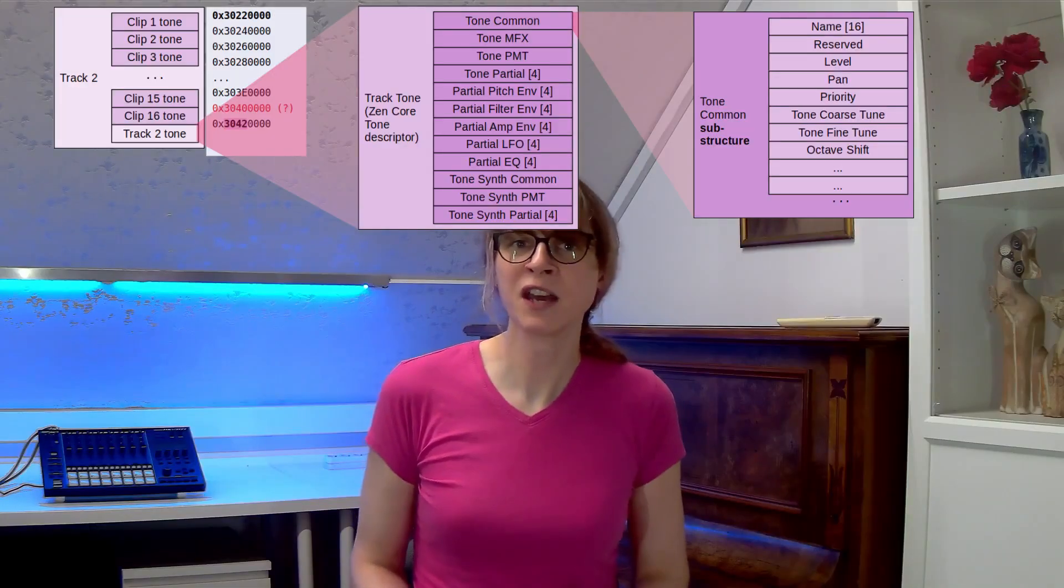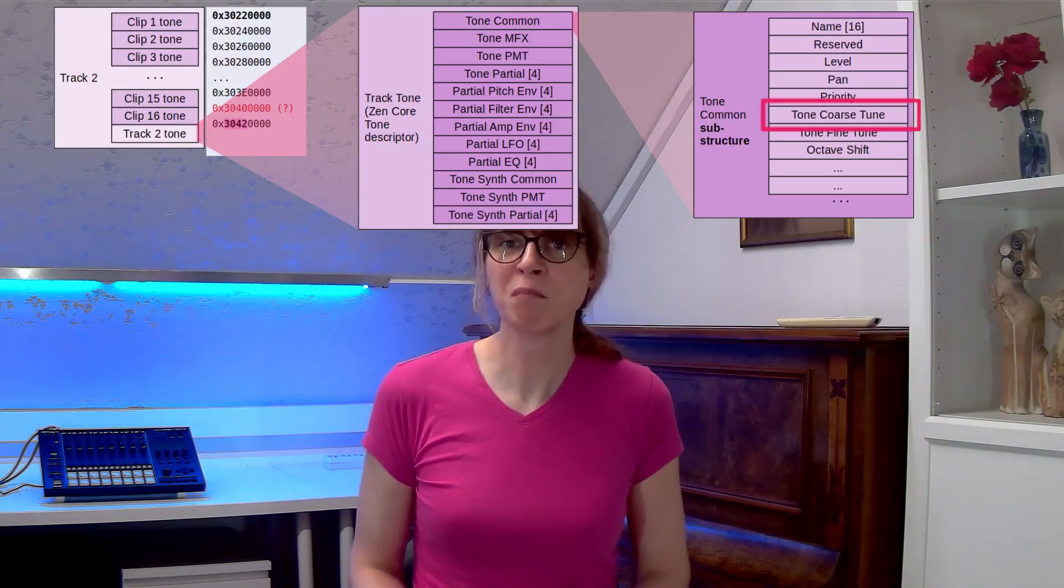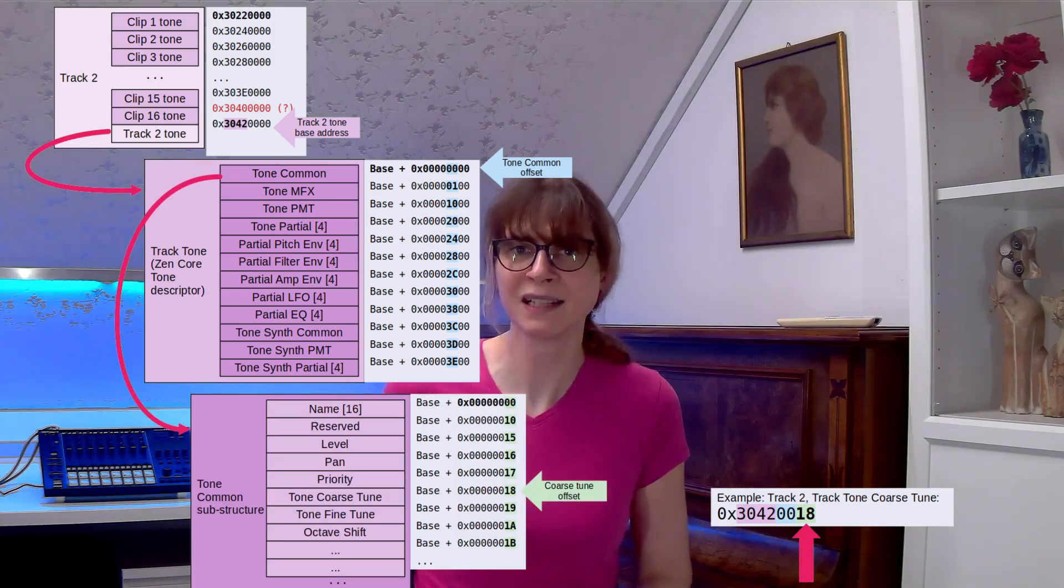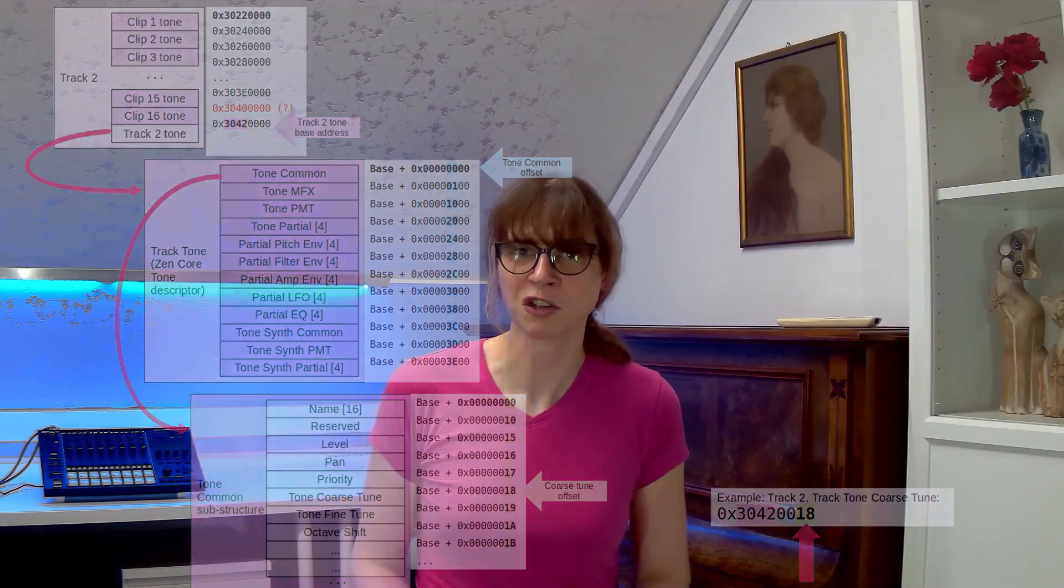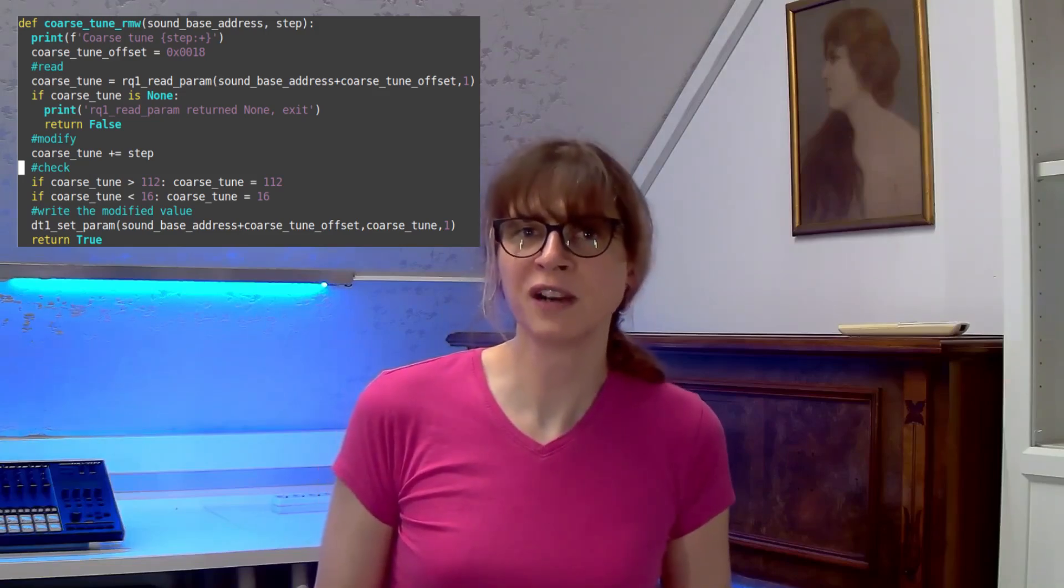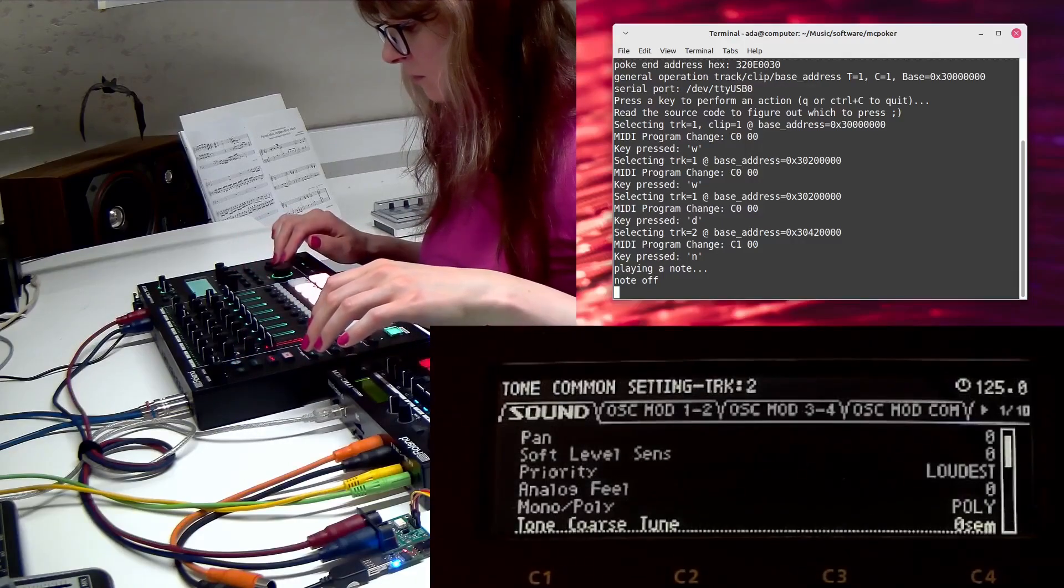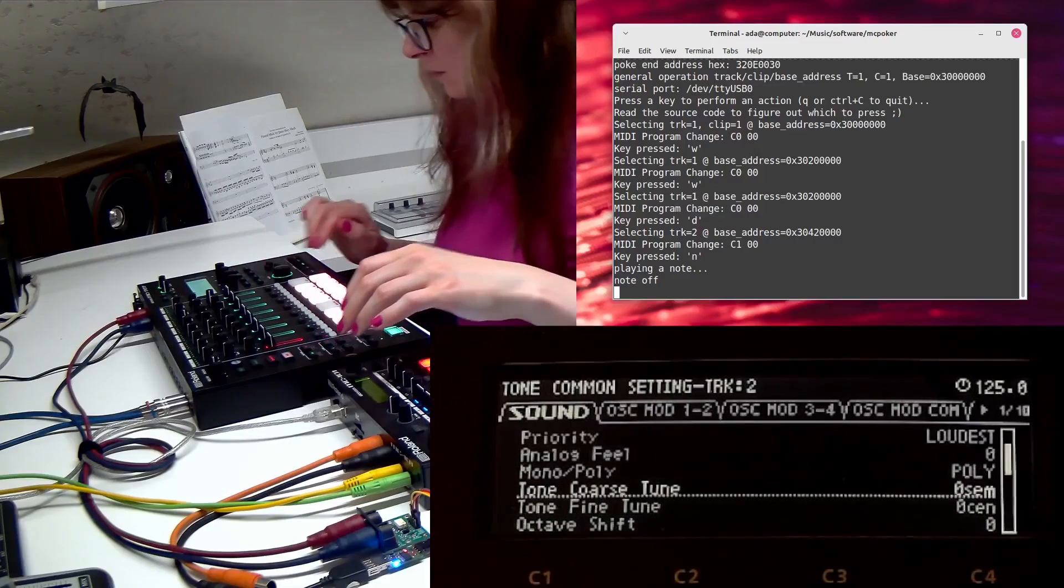Now let's modify the core tune parameter which is a part of the tone common substructure. The core tune parameter is available at the offset of 18 hexadecimal from the start of the tone common substructure. The modification is done here in this function. It reads the current core tune value, modifies it and writes it back. The modification requires writing only one byte of data. I enter the sound menu with shift plus sound and I navigate to core tune so that we can see what's going on.